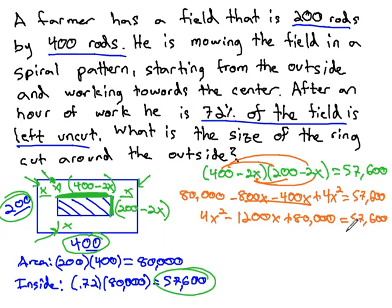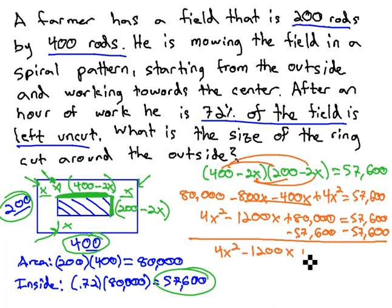It needs to equal zero before we go anywhere else, so we'll subtract 57,600 from both sides, giving us 4x squared minus 1200x plus 80,000 minus 57,600 is 22,400 equals zero.